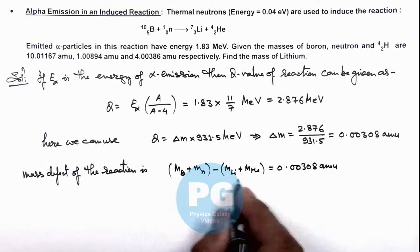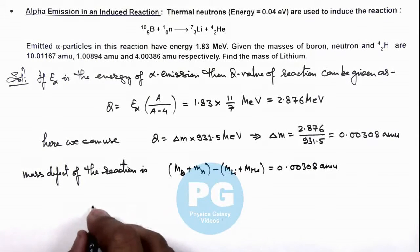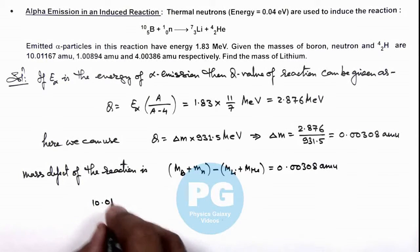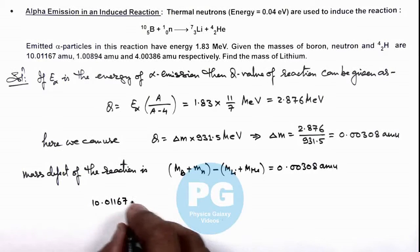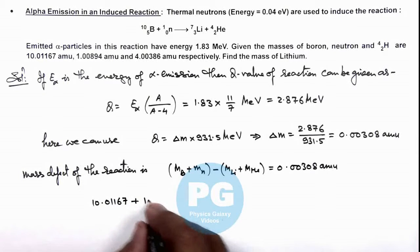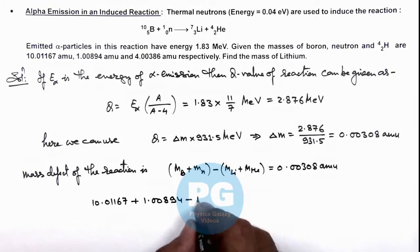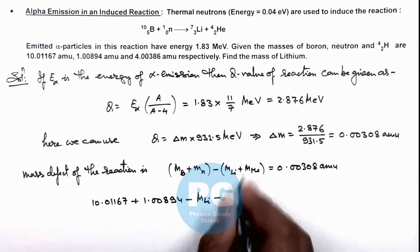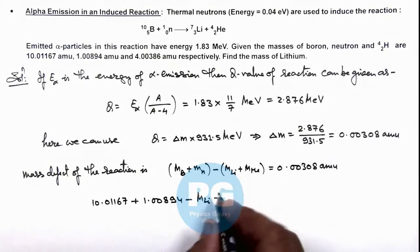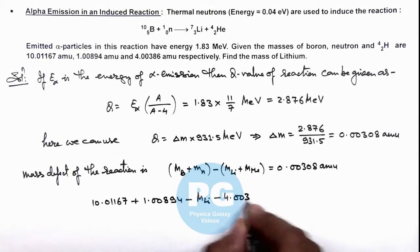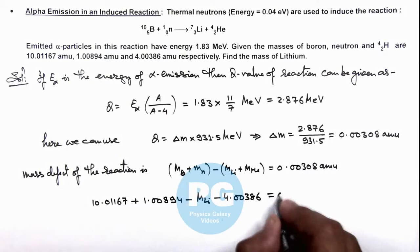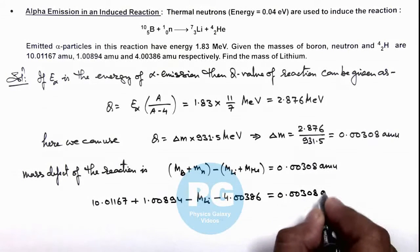If we substitute the numerical values here, this will be 10.01167 plus 1.00894 minus mass of lithium minus that of helium which is 4.00386, which is equal to 0.00308 amu.